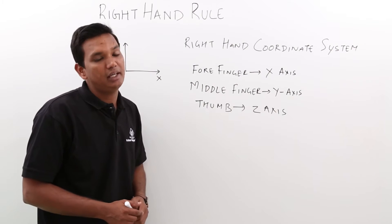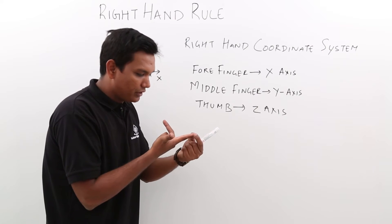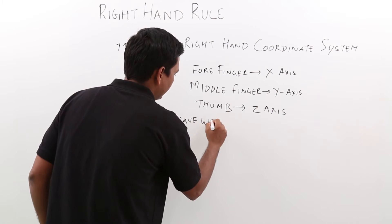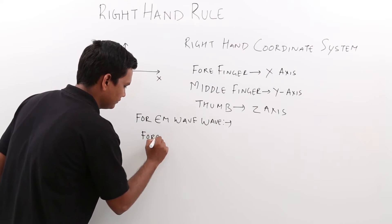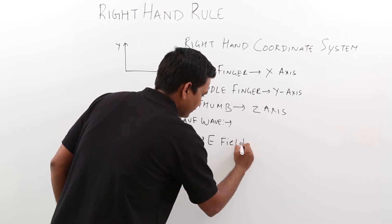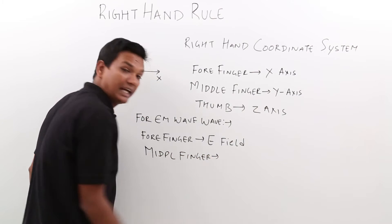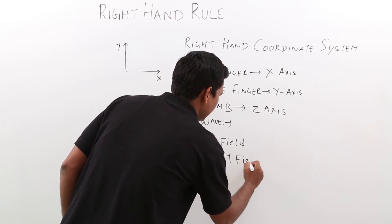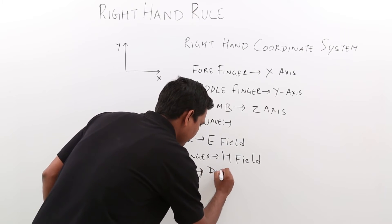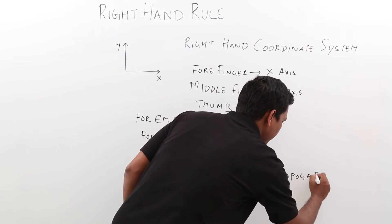Let us understand the right hand coordinate system in electromagnetic waves. For an EM wave, there is another principle: your forefinger should point in the direction of the electric field (E field), your middle finger should point in the direction of the magnetic field (H field), and your thumb should point in the direction of propagation.